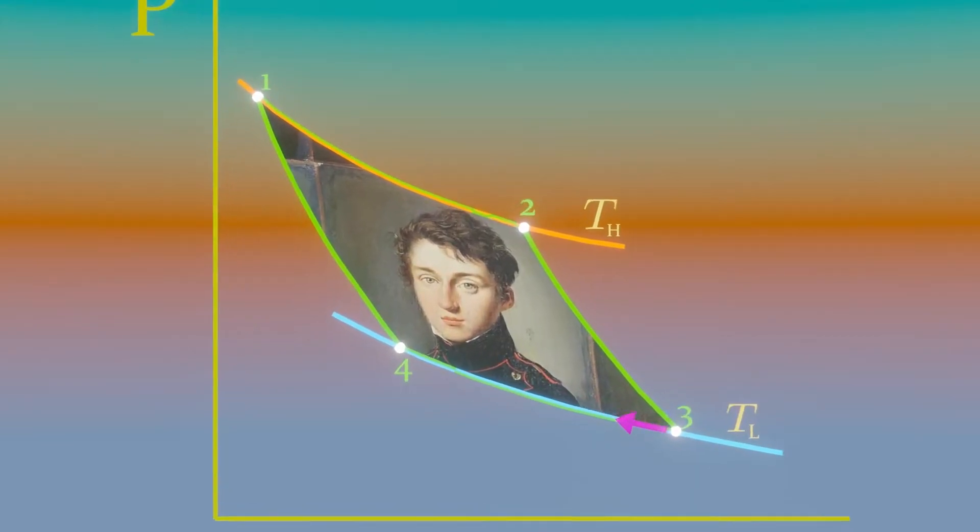Probably the best-known reversible cycle is the Carnot cycle, first proposed in 1824 by French engineer Sadi Carnot.